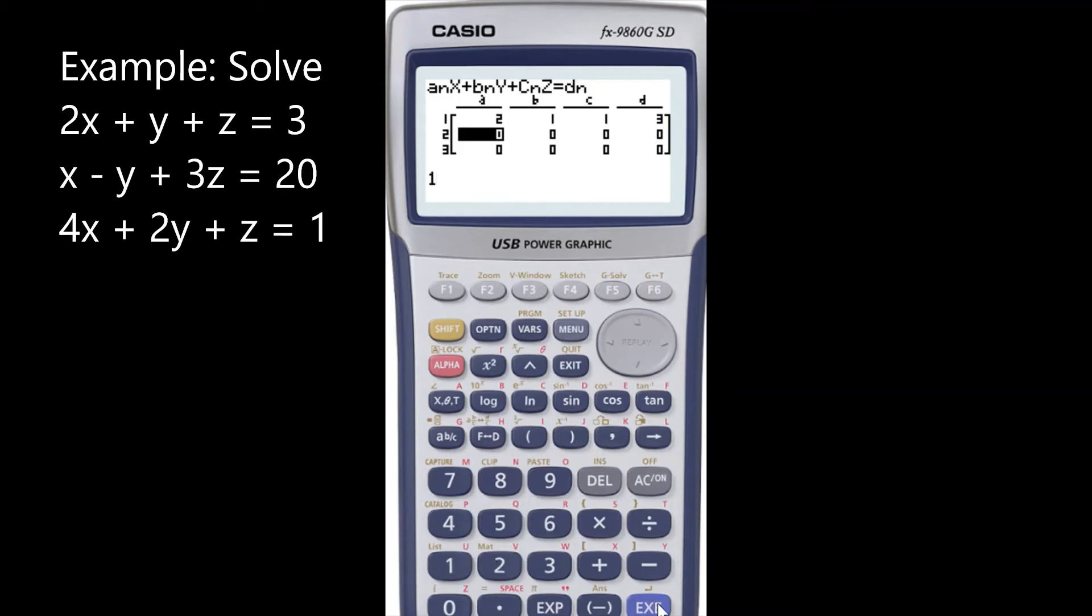So 1X so 1 enter, negative 1 because it was negative Y, plus 3Z so 3 enter, and then 20.